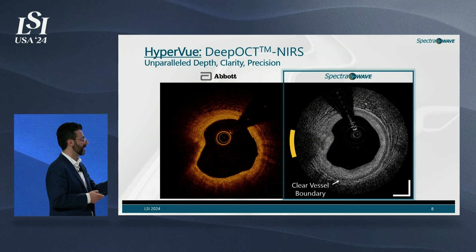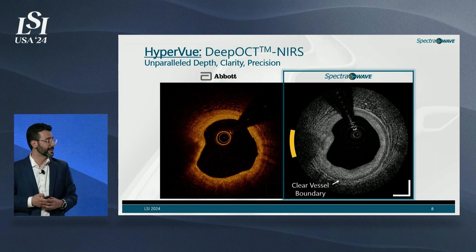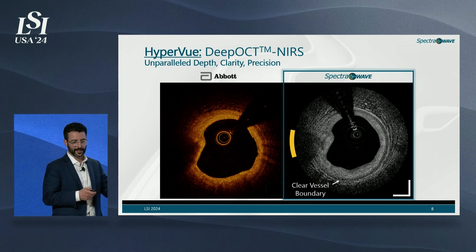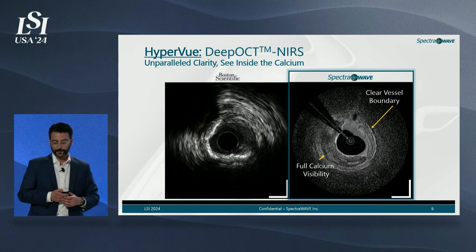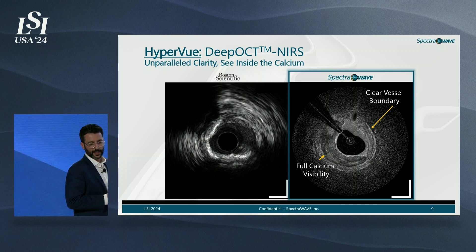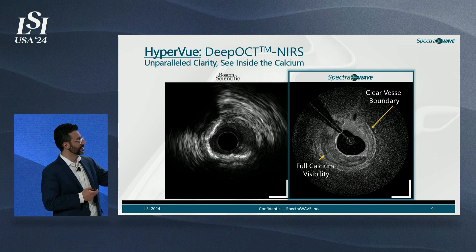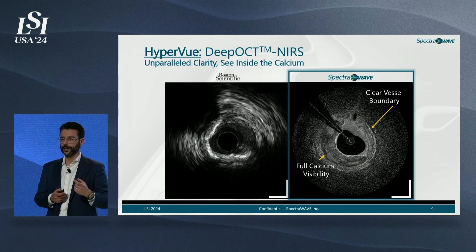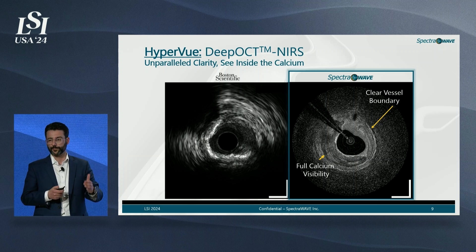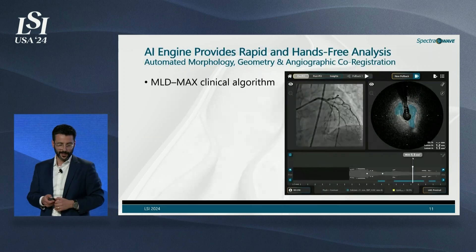Another example highlights our ability to identify the external elastic lamina, or EEL — the vessel boundary representing the native dimension prior to disease — which is essential for stent sizing. Compared against IVUS platforms that represent the current standard of care, our technology clearly evaluates calcium load and specifically calcium thickness, which is critical when pre-modifying the vessel prior to stenting. The image quality difference is truly night and day.